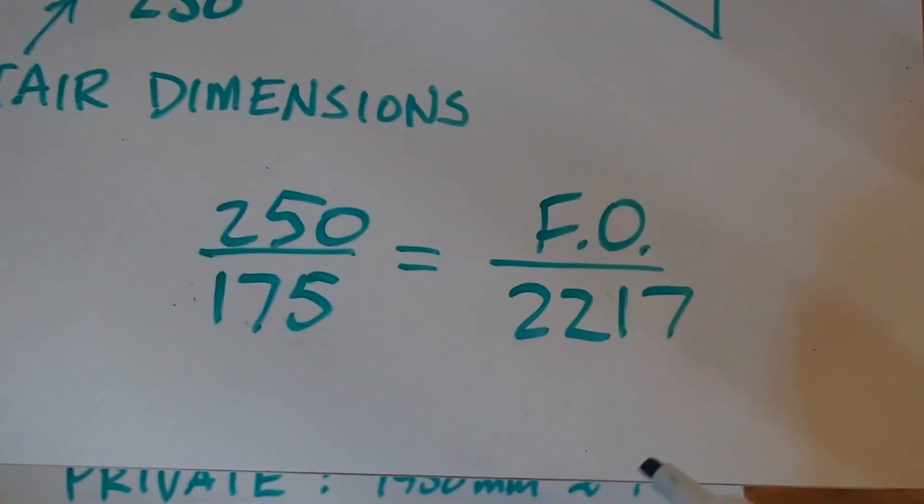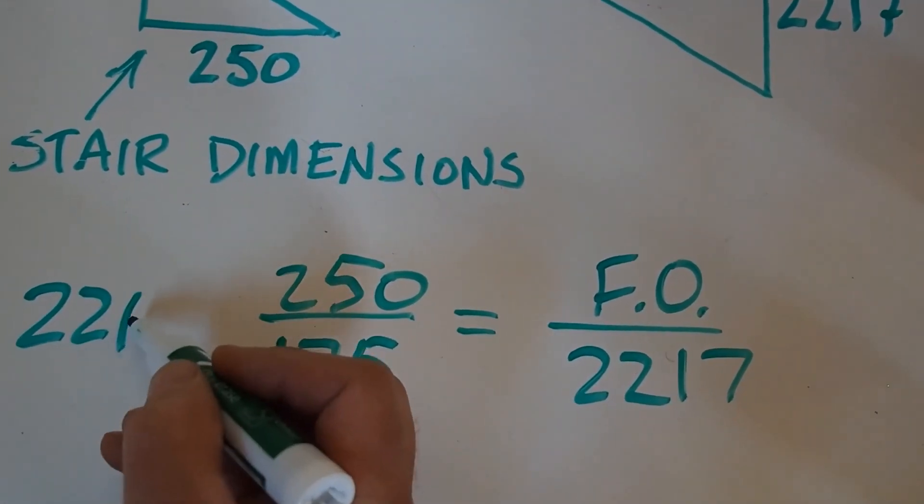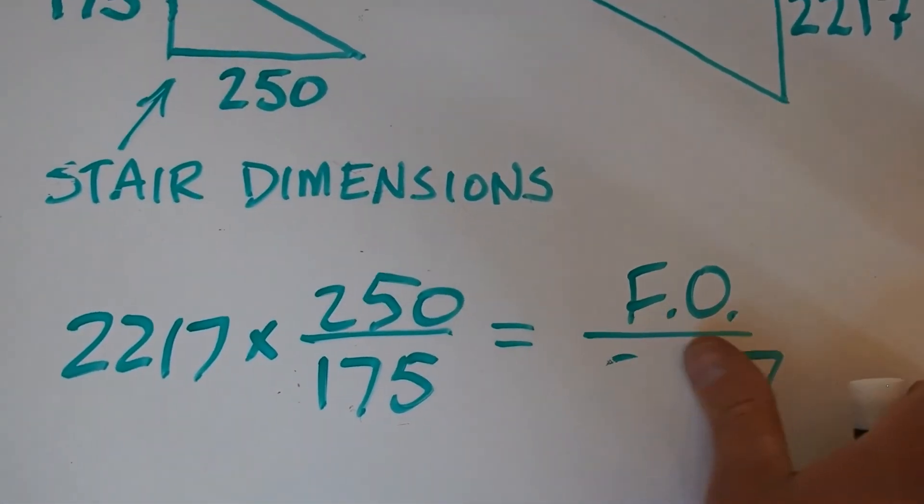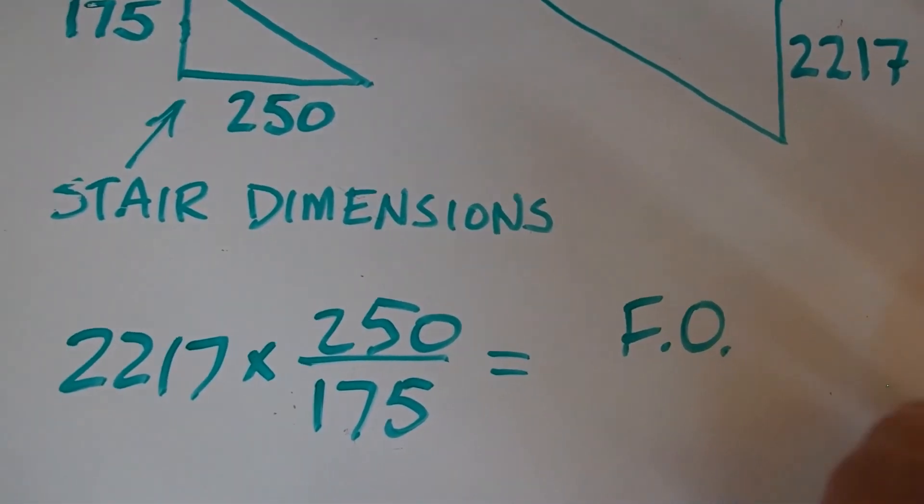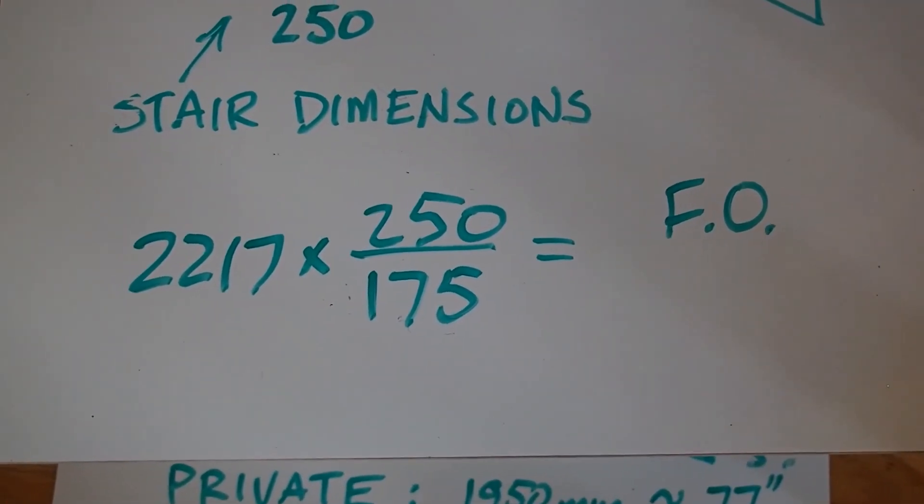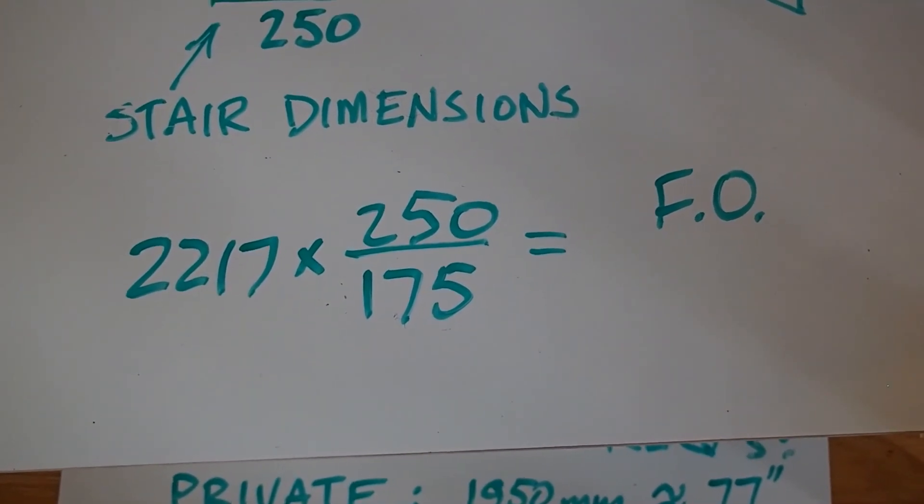And now I'm going to isolate the variable by multiplying both sides by 2,217. And remember when I do that to this side, they cancel each other out. So my finished opening is 2,217 times 250 divided by 175.